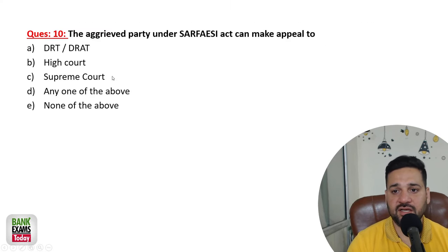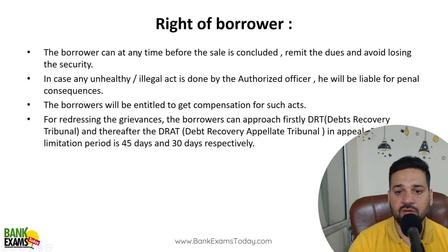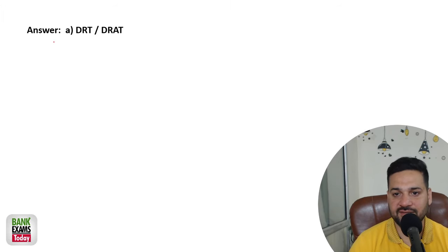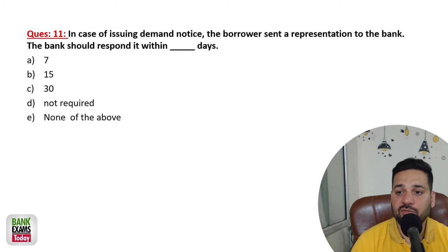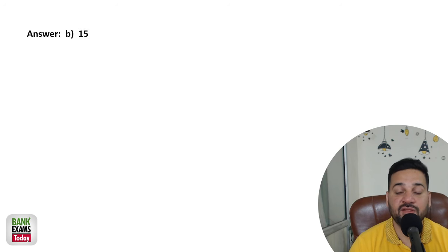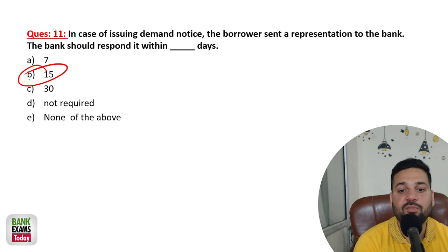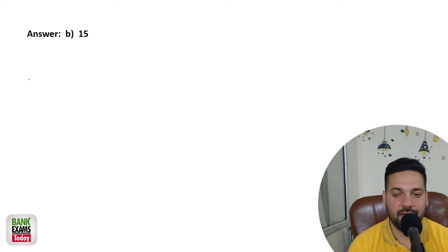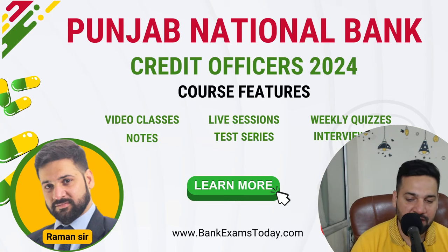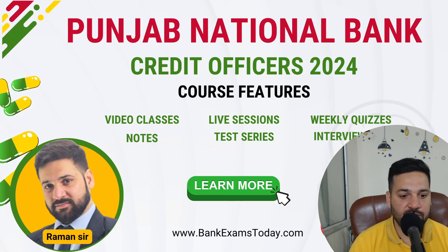The aggrieved party under SARFAESI Act can appeal to DRT or DRAT — not directly to the High Court or Supreme Court. In case of issuing a demand notice, if the borrower sends a representation to the bank, the bank should respond within 15 days. So borrowers get 60 days, and banks get 15 days to reply.